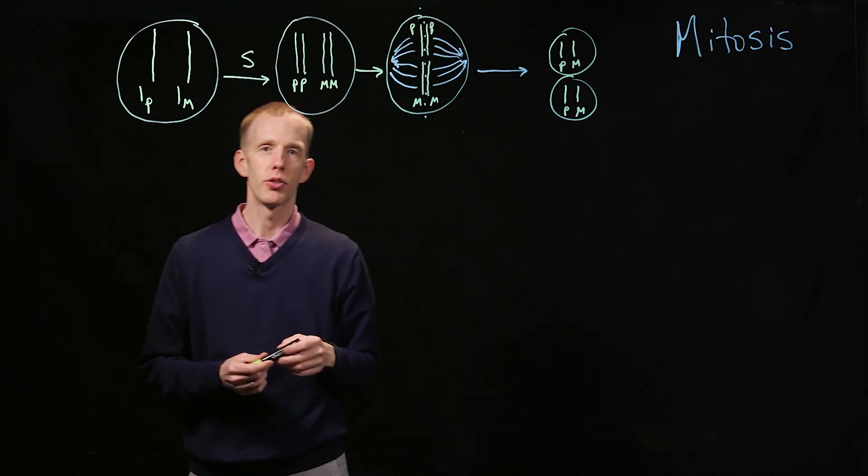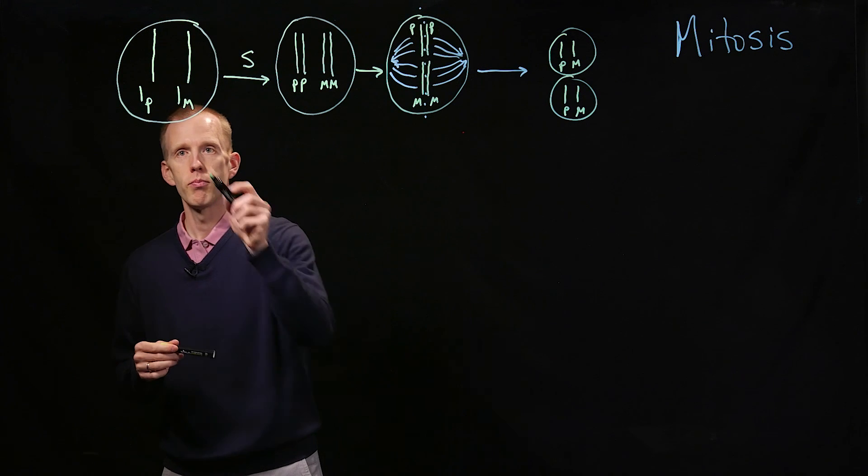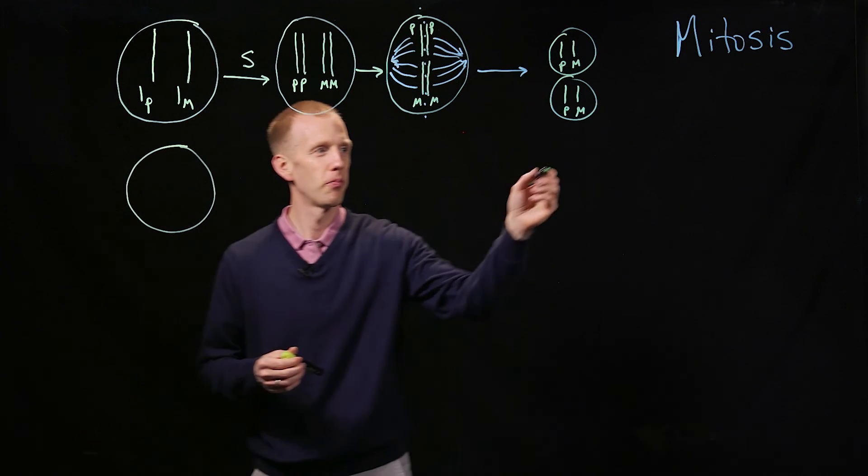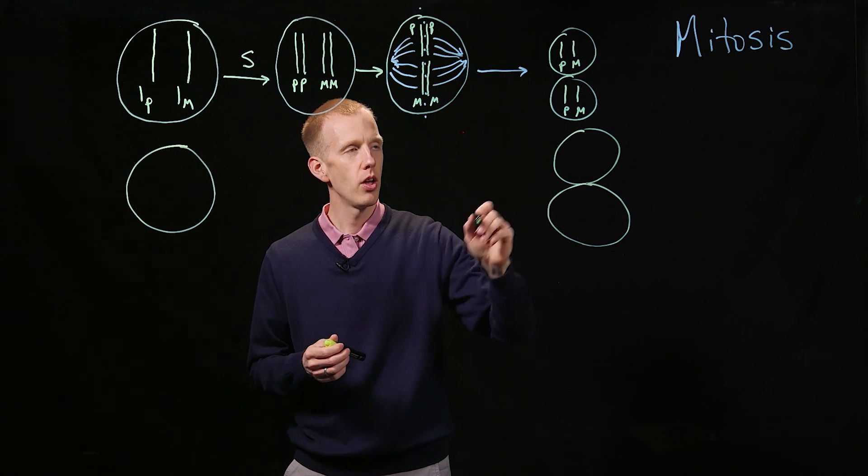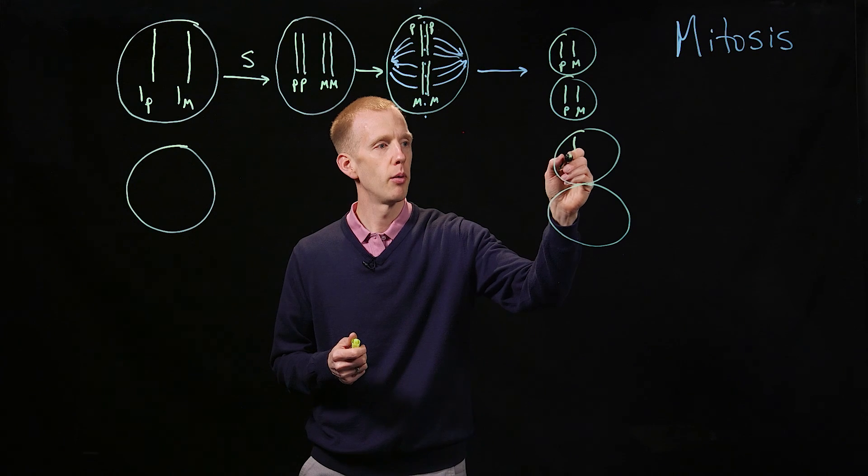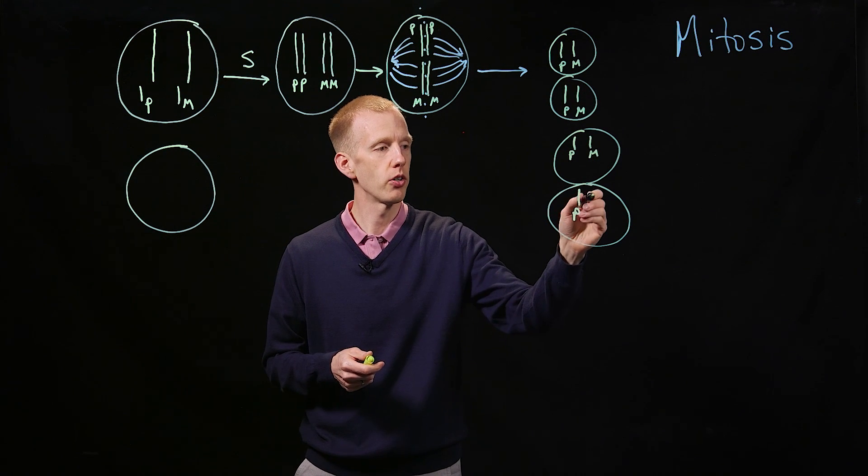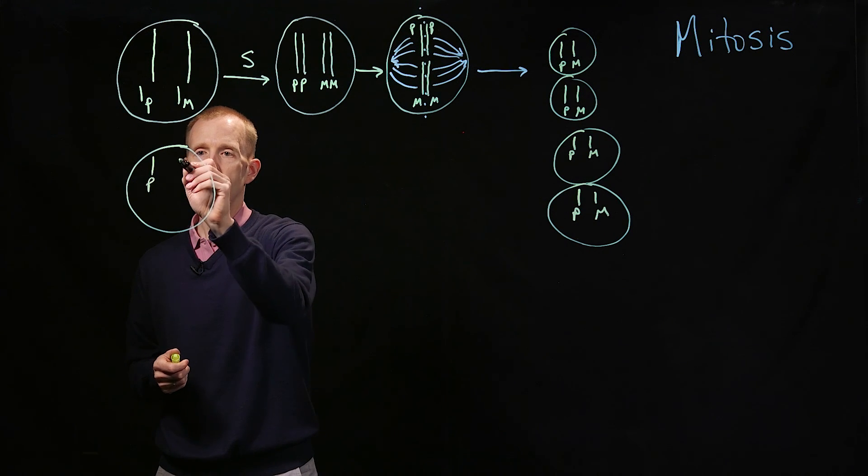We could also look at mitosis at two different chromosomes. So we could have a cell, make it a little bit more complicated now. We've got the end point, we've got the starting point. So in this case, we've got a paternal and a maternal copy of one chromosome in each of the daughter cells. And that's where we start.